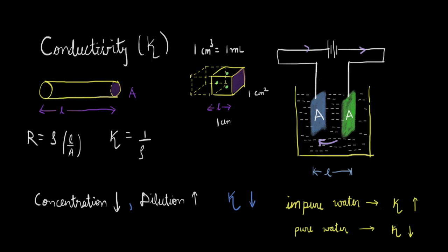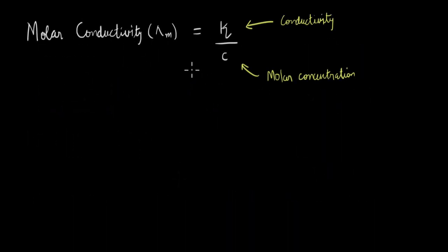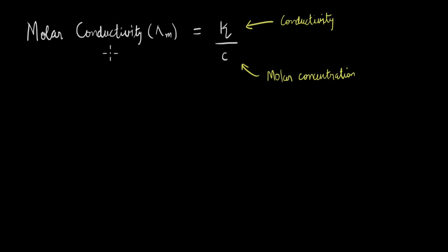Now let's see what is the relationship between molar conductivity and concentration. Molar conductivity, denoted by lambda m, is defined as the conductivity kappa divided by the molar concentration or molarity. So you can think of the molar conductivity as the conductivity on a per-mole basis. I know that there is a concentration term in the denominator, so it might seem that molar conductivity and concentration are inversely related — so would it be correct to say that if we decrease the concentration, the molar conductivity will increase? Take a few seconds to think about this.